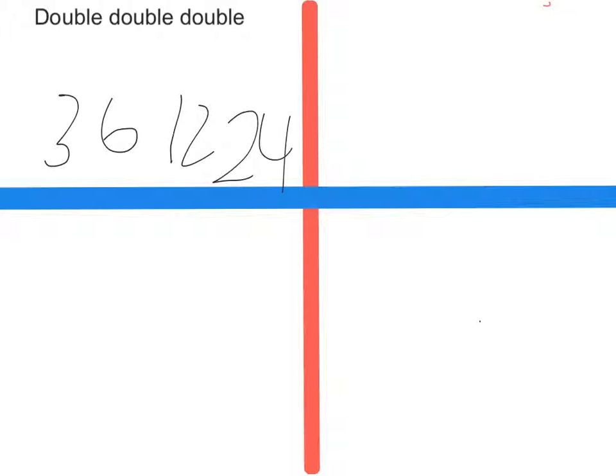Another example is six times eight. So six doubled is twelve, doubled again is twenty-four, doubled one more time is forty-eight. That is how you do the double double double strategy.